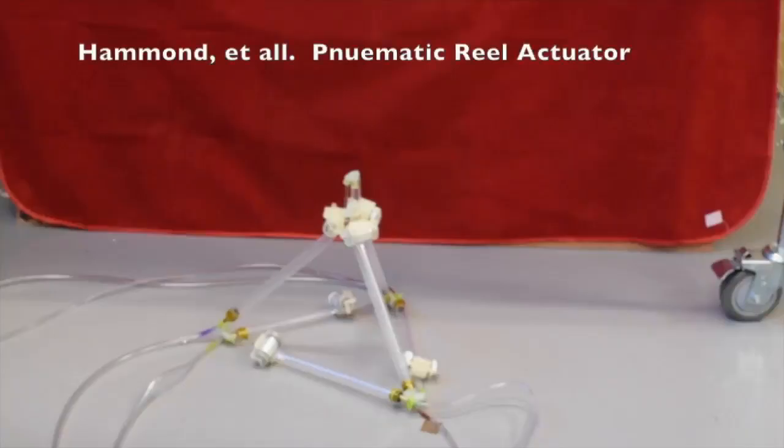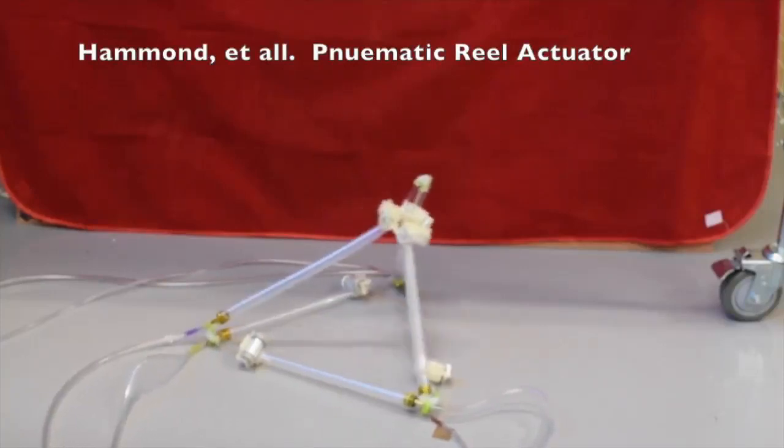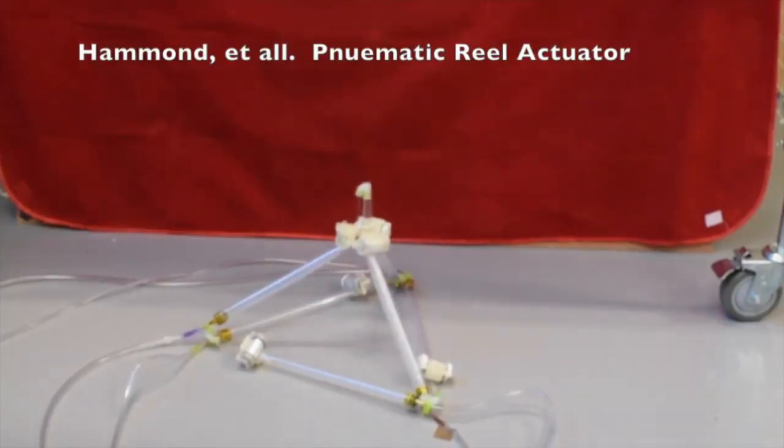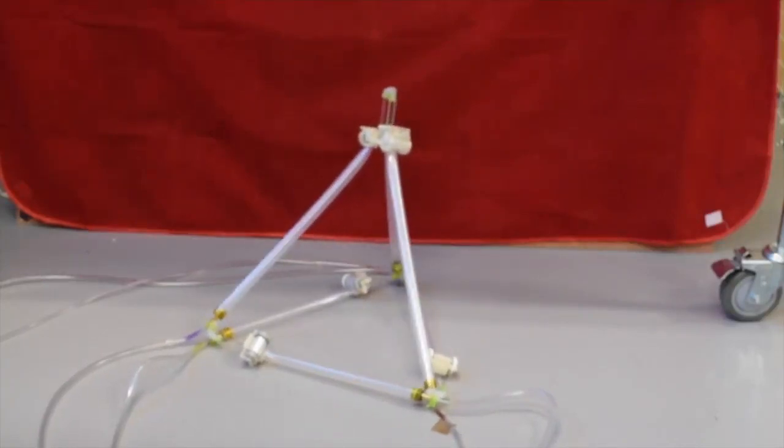Due to recent advances in the availability of high elongation linear actuators, such as the pneumatic rail actuator designed by Hammond et al., we present control algorithms for what we will call linear actuator robots.